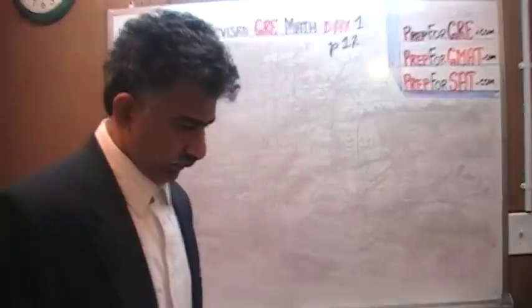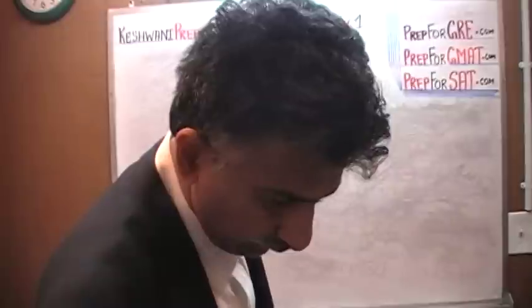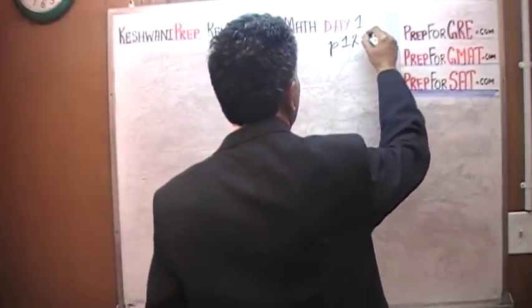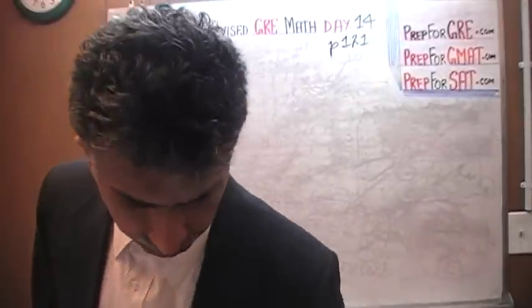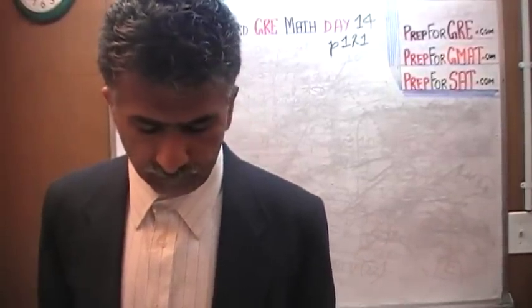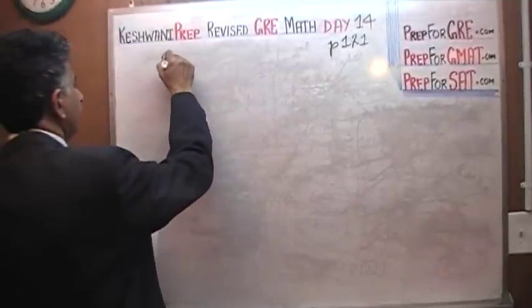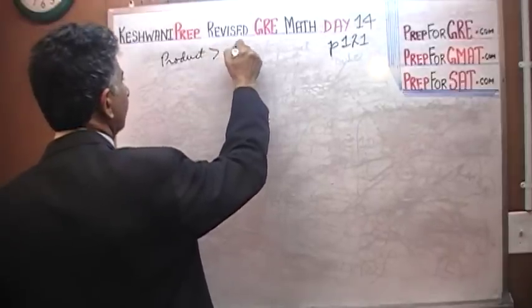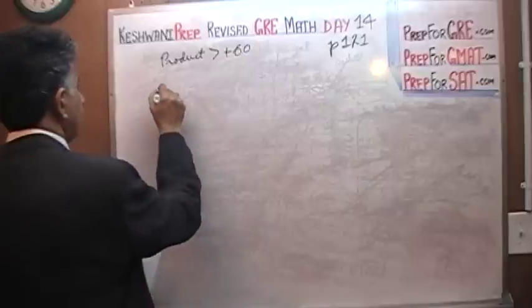We are on page number, the problem that I'm about to solve is the one that you're going to find on page number 121. Today is our day number 14. Turn to page 121 and you will see the question. It says, which of the following numbers have a product greater than 60? And of course the 60 that they're giving us is positive 60.